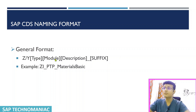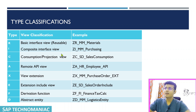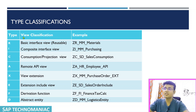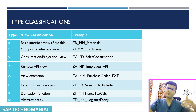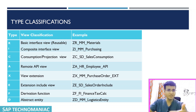We can also add versioning after the suffix. For the basic CDS views created directly on top of tables — which are reusable — we use ZR. For the composite interface view, created on top of basic views and other tables, we use ZI, since these are interface views. Next is the projection or consumption view; in RAP we call these projection views, and for those we use ZC.